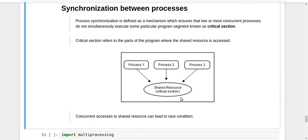Why do we want this? Process synchronization is a mechanism which ensures that no more than one process executing at the same time can try to execute the critical section. This is important because allowing two or more processes to access or update the value of shared data simultaneously can lead to a race condition — you might get unpredictable values of your shared data. Let us see how this race condition can occur with the help of a simple example.